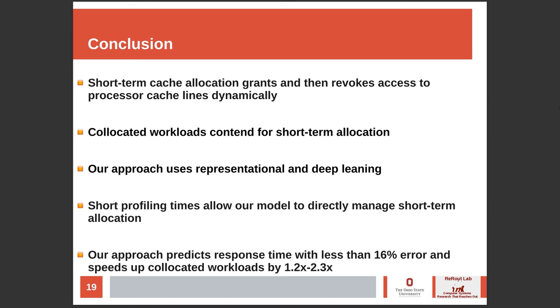In conclusion, short-term cache allocation grants and then revokes access to processor cache lines dynamically. Workloads co-located via shared cache cause recurring slowdowns that degrade performance. Our approach uses representational and deep learning to extract subtle relationships between application-level metrics and micro-architectural metrics. With low profiling times, our model can directly manage short-term allocation. We showed our approach predicts response time with less than 16% error and speeds up co-located workloads by 1.2x to 2.3x. Thank you.